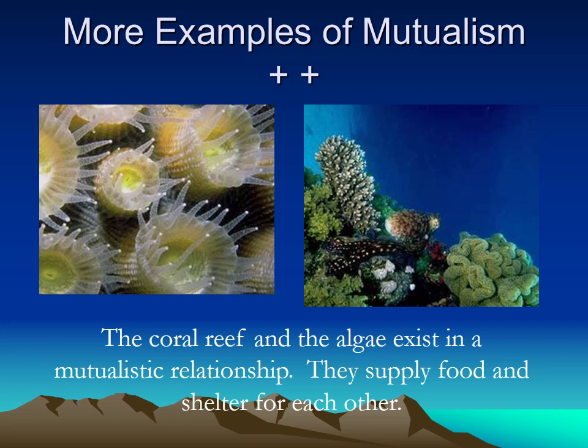The coral reef and algae exist in a mutualistic relationship. The algae supplies food for the coral reef, and the coral reef provides shelter — a place for the algae to live. Since both of them got something good out of it, this is mutualism: plus-plus.